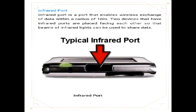Next is the infrared port. An infrared port is a port that enables wireless exchange of data within a radius of 10 meters. Two devices that have infrared ports are placed facing each other so that beams of infrared light can be used to share data. Infrared port is also commonly referred to as IrDA, which stands for Infrared Data Association, and it is a port much like what we would find on a TV or VCR remote. Various infrared devices are available to end users, including IrDA adapters, mouse, keyboards, PDA, printer, computer remotes, and network solutions.